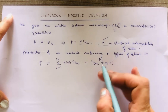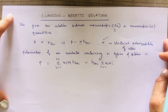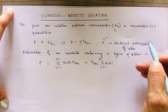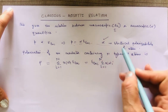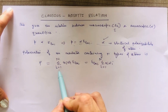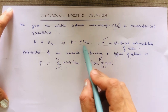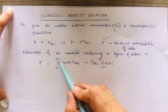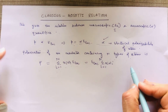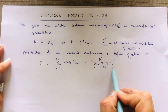For the polarization of an insulator containing n types of atoms, the total polarizability is the sum of contributions from individual atoms. If we have n types of atoms, then total polarization P equals the summation from i=1 to n of N_i · α_i · E_local, where N_i is the number density of atoms of type i.